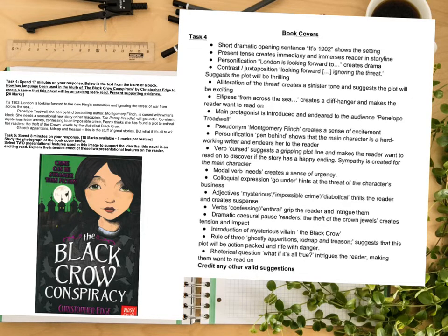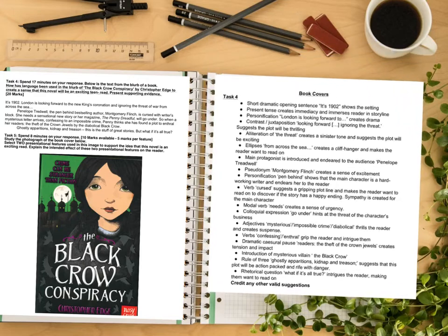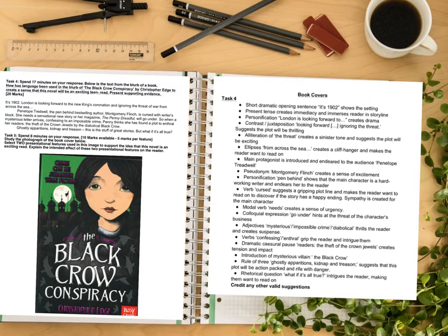Alliteration of 'the threat' creates a sinister tone and suggests the plot will be exciting. Ellipses — from across the sea... — creates a cliffhanger and makes the reader want to read on. The main protagonist is introduced and endeared to the audience, Penelope Treadwell. The pseudonym Montgomery Flinch creates a sense of excitement. Personification — pen behind — shows that the main character is a hard-working writer and endears her to the reader. The verb 'cursed' suggests a gripping plotline and makes the reader want to read on to discover if the story has a happy ending, and sympathy is created for the main character.